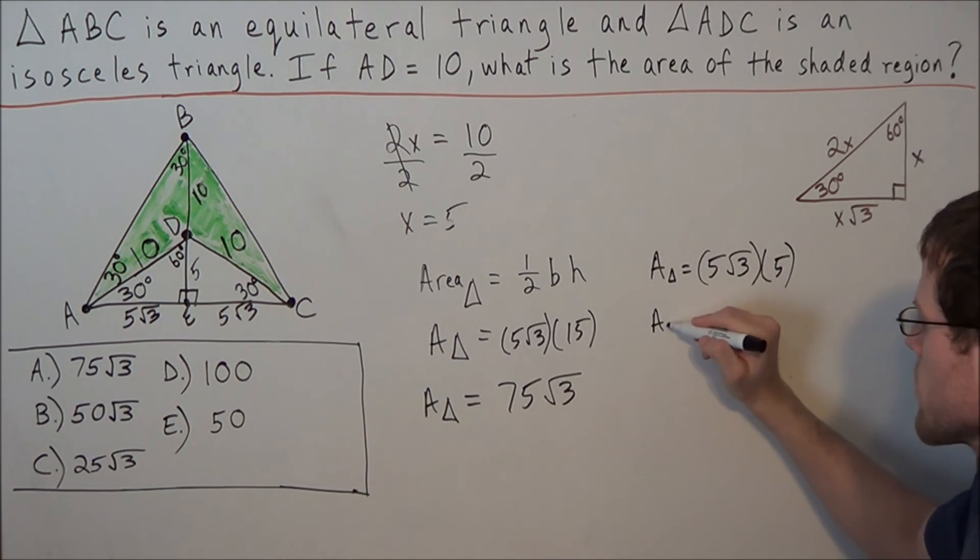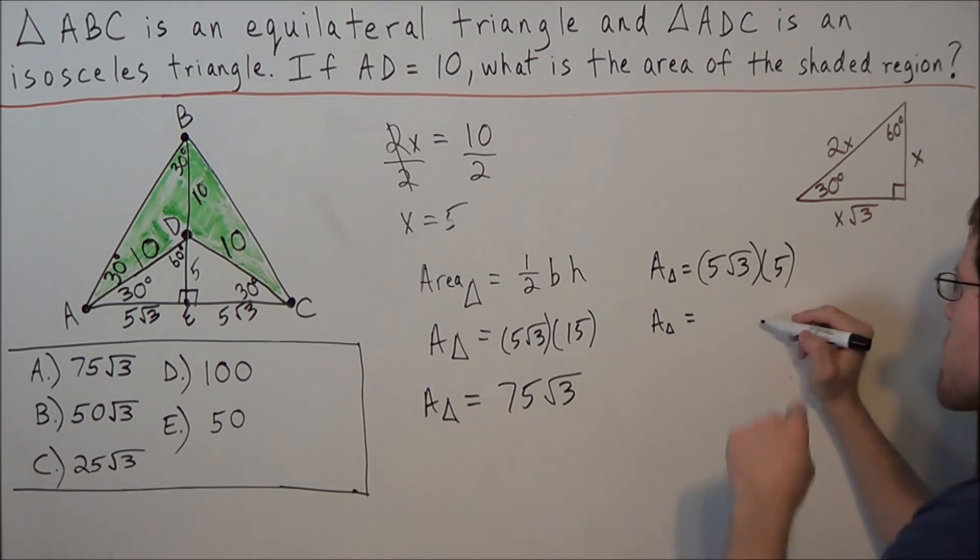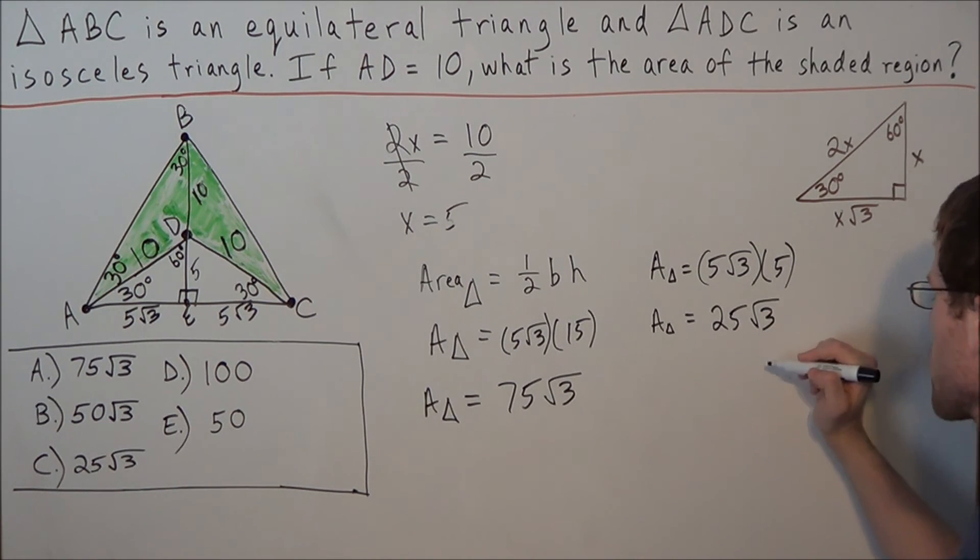So then the area of the little triangle equals, and we have 5 times 5 is 25. So 25 radical 3.